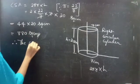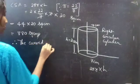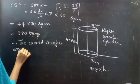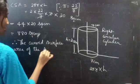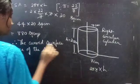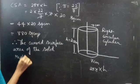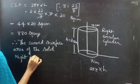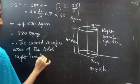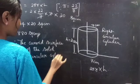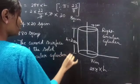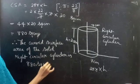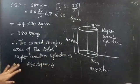They have mentioned solid right circular cylinder, so we have to consider it as such. Therefore the curved surface area of the solid right circular cylinder is 880 square centimeters.